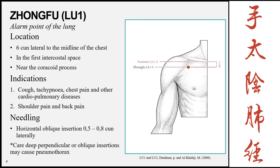Now we're going to move on to the first point of the meridian. A few things to note: the slide starts with the Chinese name, then the English abbreviation. This point is abbreviated as Lu1. All Lung points will have 'Lu' followed by the number corresponding to their order on the meridian. If it is any type of special point, that will appear beneath the name, followed by the location, indications, needling technique, and finally any caution or care needed, marked with a star.